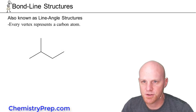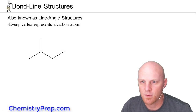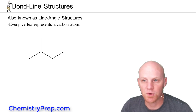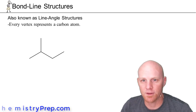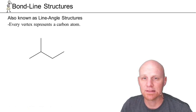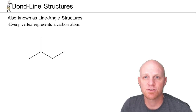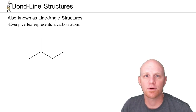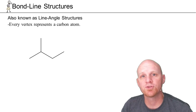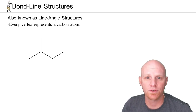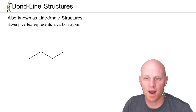Now that we've gone through condensed structures, we've got to move on to what are called bond line structures, or line angle formula. This is the ultimate in organic chemistry laziness — organic chemistry molecules contain carbons and hydrogens so ubiquitously that we just stop drawing them altogether. You're just supposed to know where they're at.